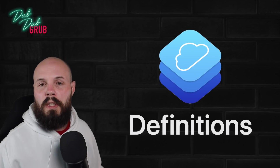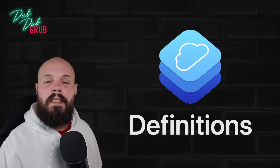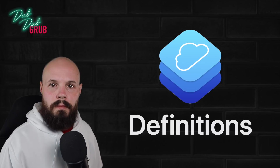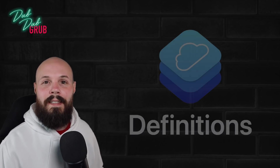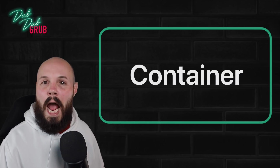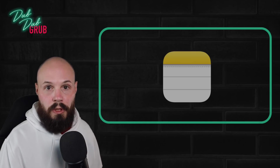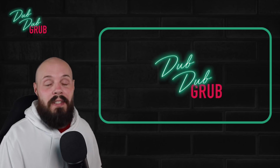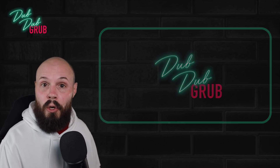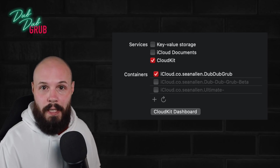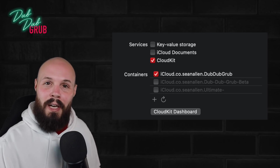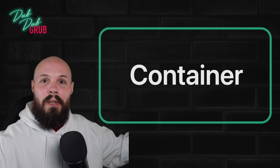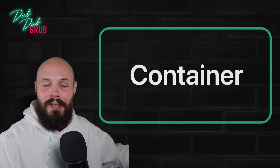In this video we're going to cover some basic CloudKit terminology and definitions you should know before you start using it. Starting at the top: a container is app-specific. For example, Notes has a container, Photos has a container, DubDubGrub has a container. In Xcode we already created our container — you remember checking that little box. The container is the big overall wrapper for your app, and there's stuff inside it we're going to talk about next.